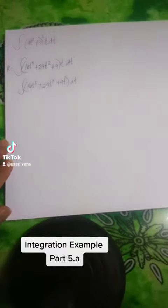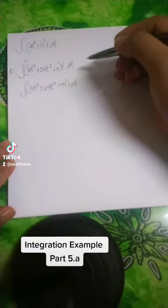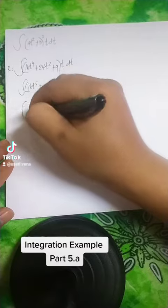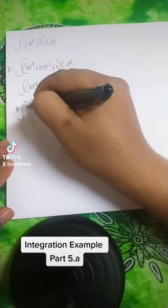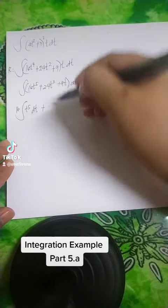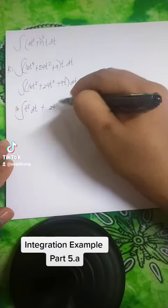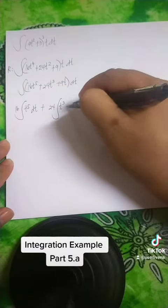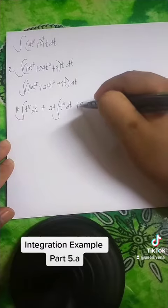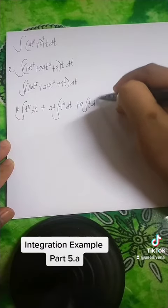Okay, so by the rule of anti-differentiation, we can separate the sum. So that is equal to 16t to the 5th dt plus 24 integral of t cubed dt plus 9 integral of t dt.